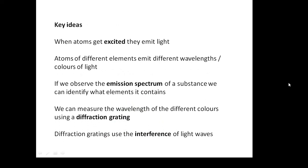These are the key ideas which you need to remember. When atoms get excited, they emit light. Atoms of different elements emit different wavelengths or colours of light. If we observe the emission spectrum of a substance, we can identify what elements it contains. We can measure the wavelength of the different colours using a diffraction grating. And diffraction gratings use interference. Okay, they rely on the interference of light waves.